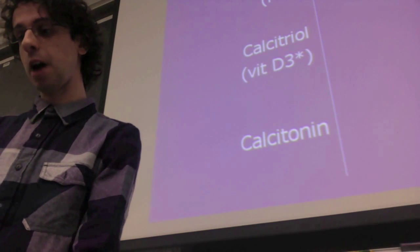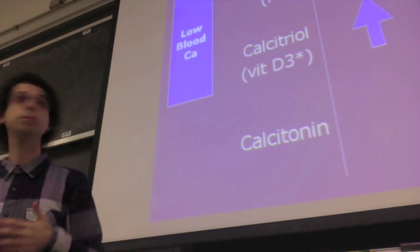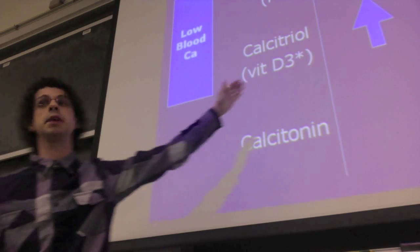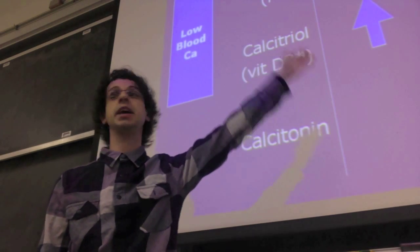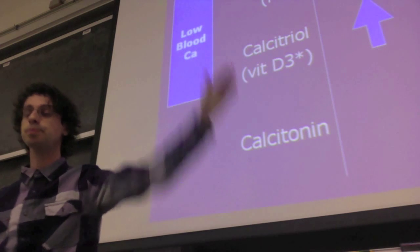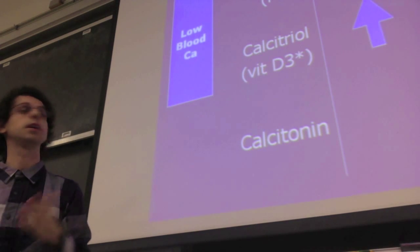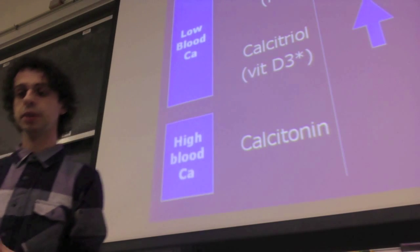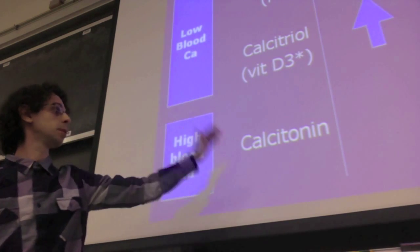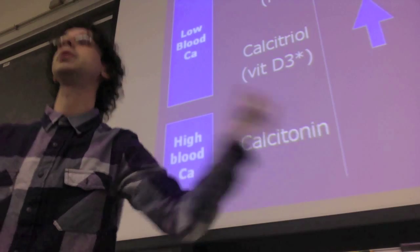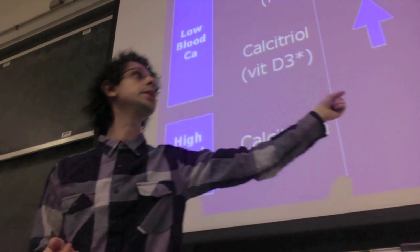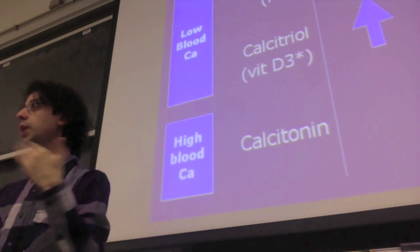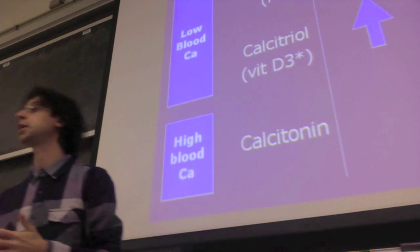If blood calcium levels drop, parathyroid hormone is released, it activates vitamin D, and together they increase absorption, decrease excretion, and if necessary steal calcium from bones. Conversely, if blood calcium is too high, calcitonin is released from the thyroid and does exactly the opposite: increases excretion and pushes calcium from the bloodstream into bones, thereby decreasing blood calcium concentration.